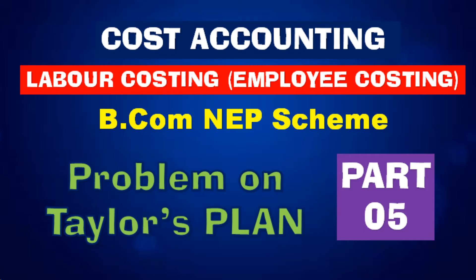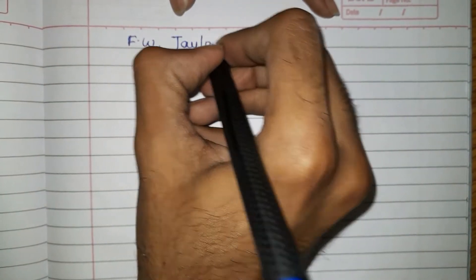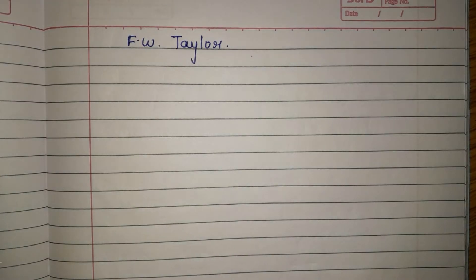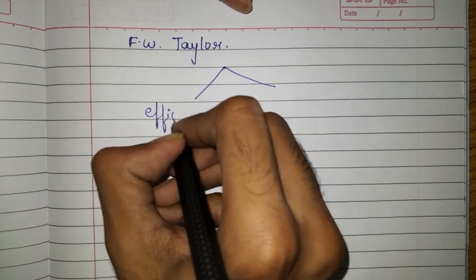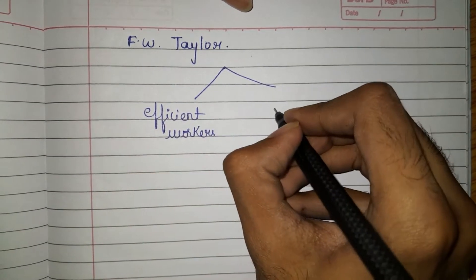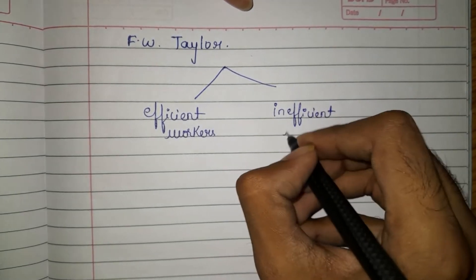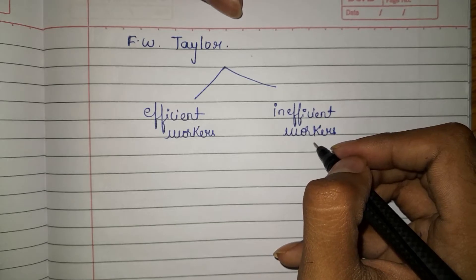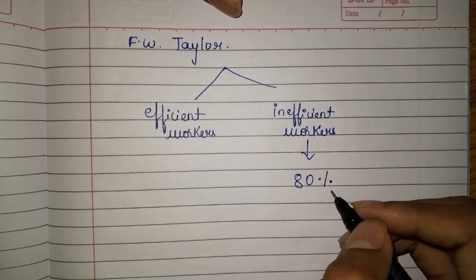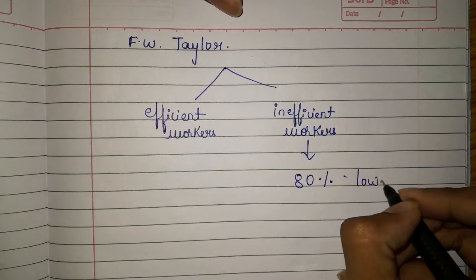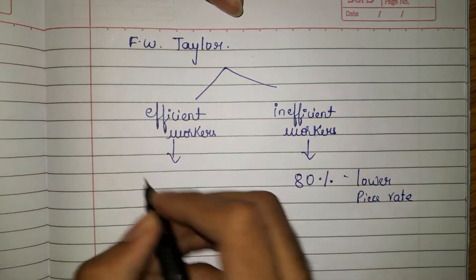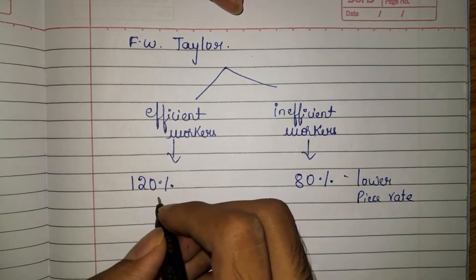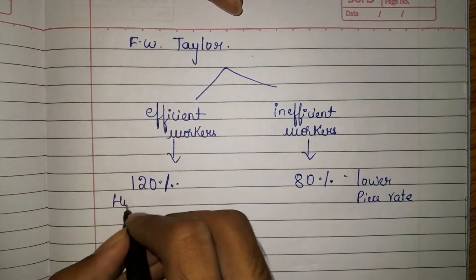In this video we will be seeing a problem calculated on the basis of Taylor's plan. There was a person called F.W. Taylor and he divided the distribution of wages into two categories: efficient workers and inefficient workers. Inefficient workers were getting 80% as the piece rate — a lower piece rate — and efficient workers were told they need to get 120% of the rate, that is a higher piece rate.